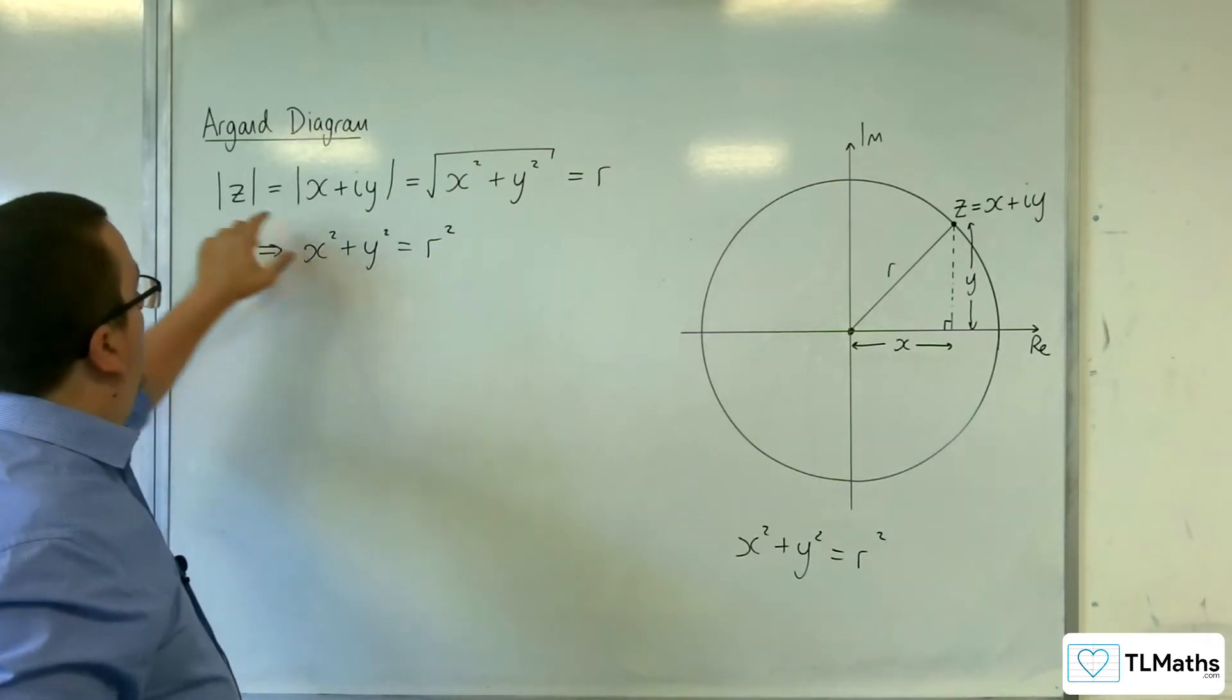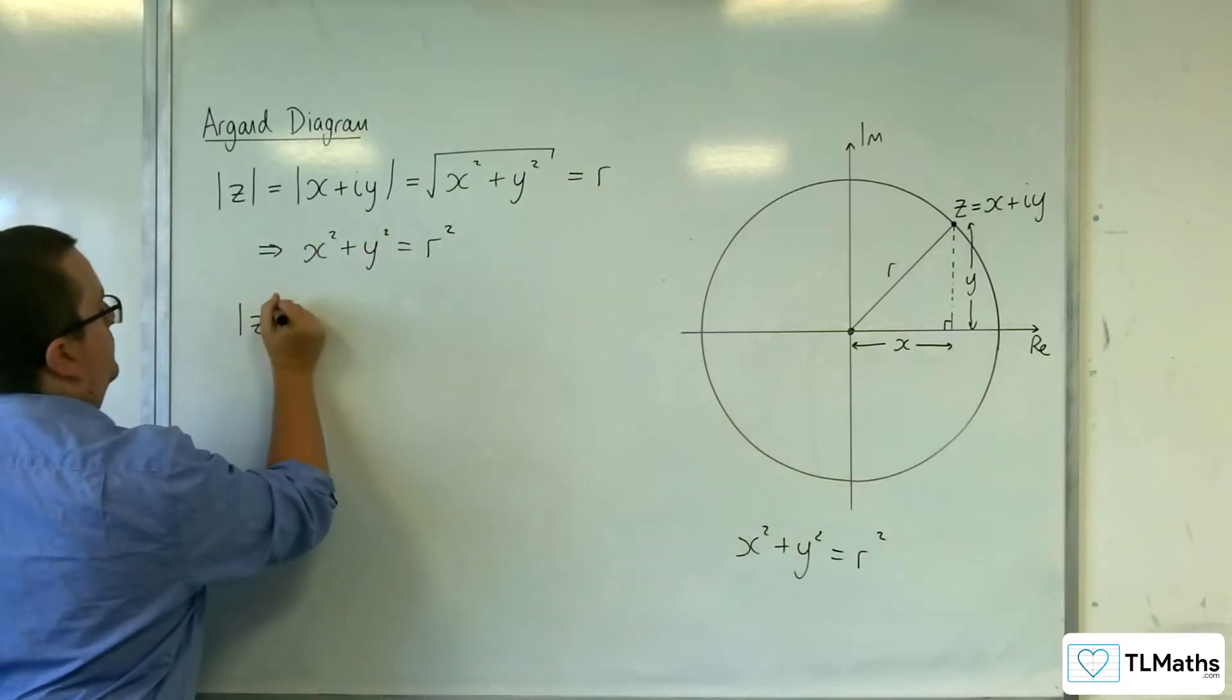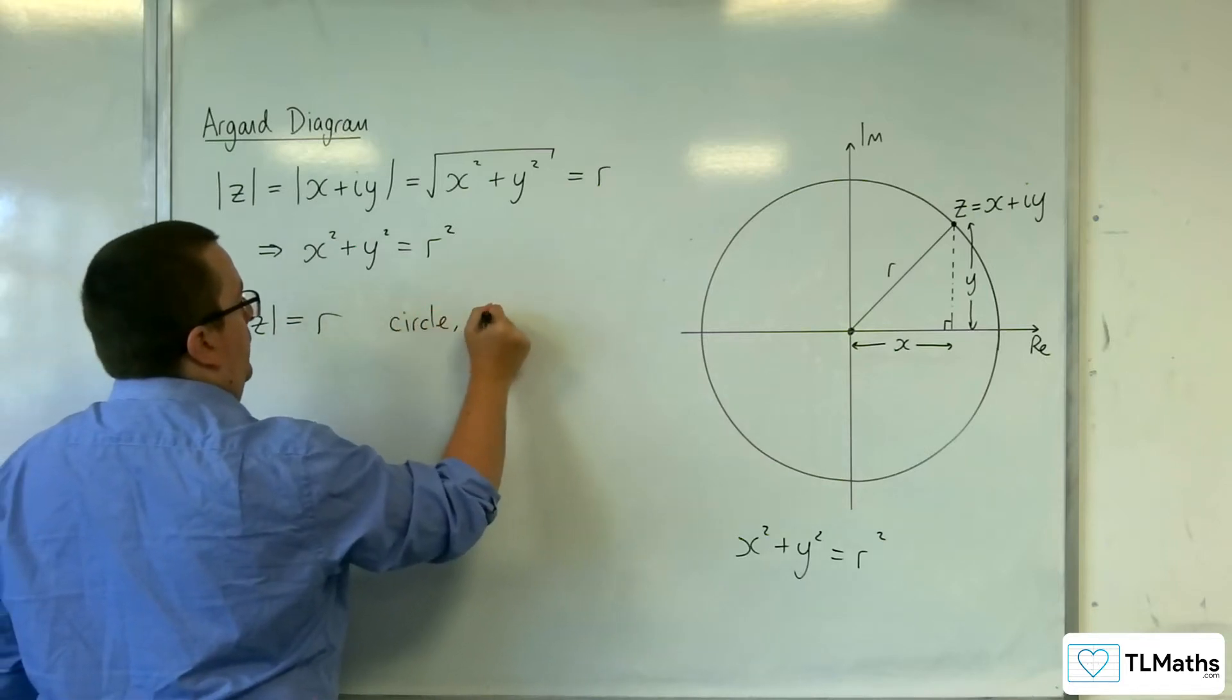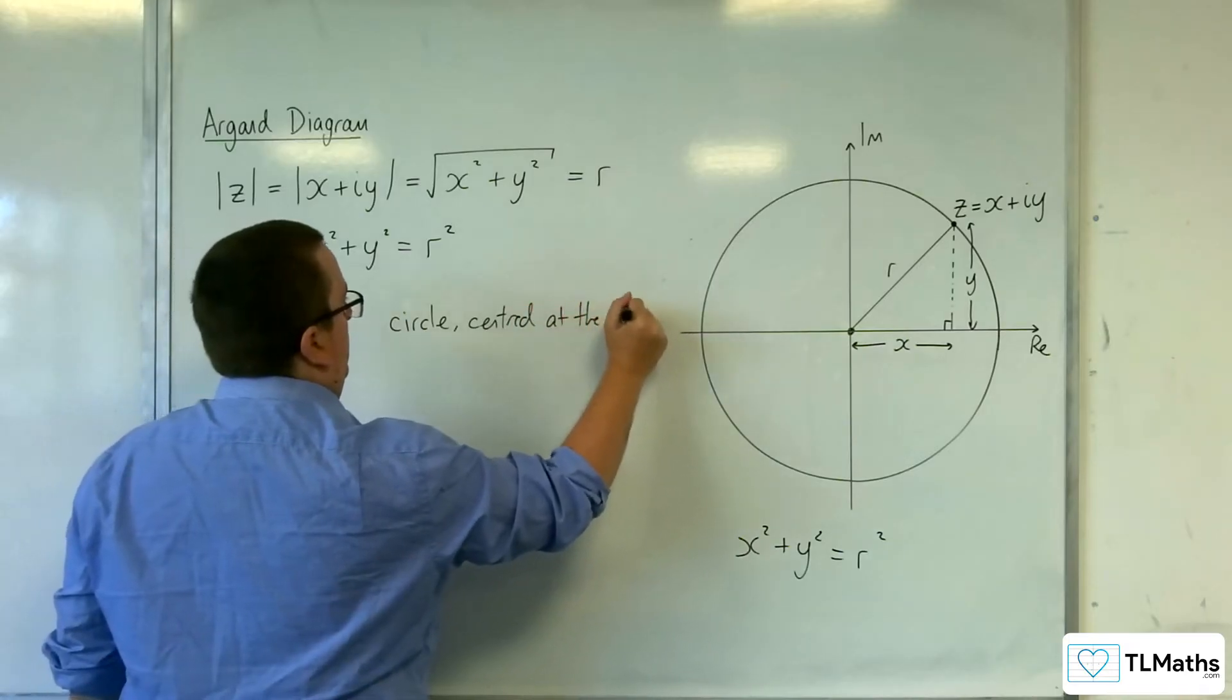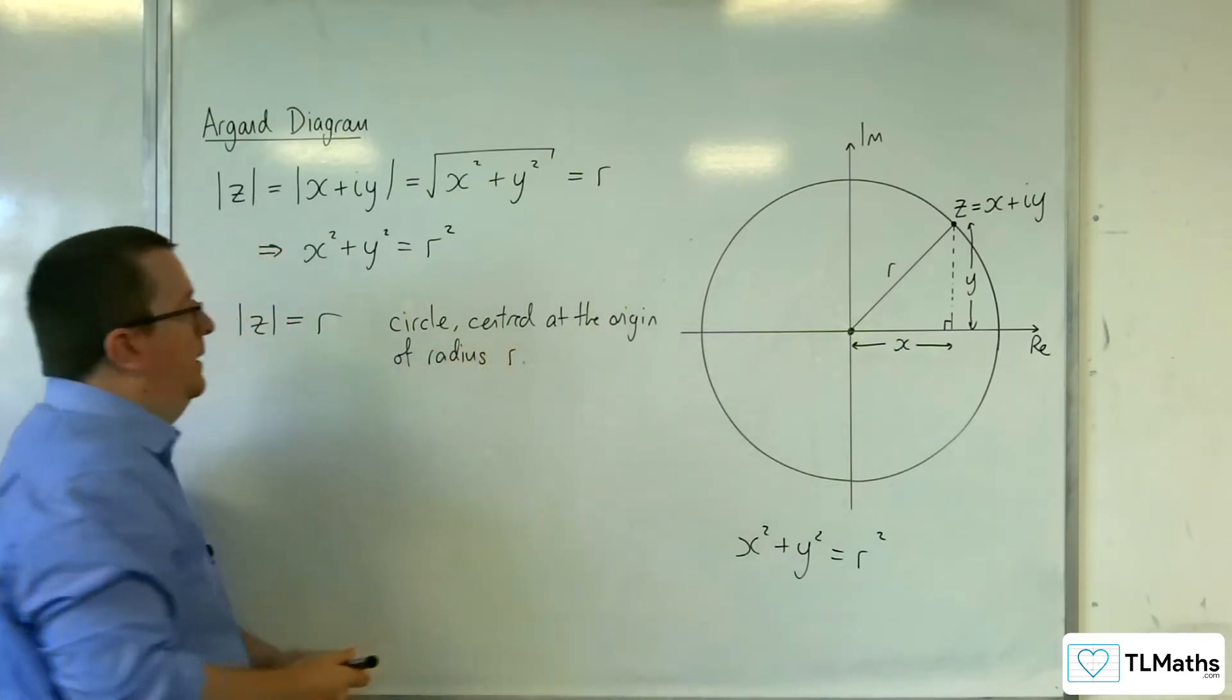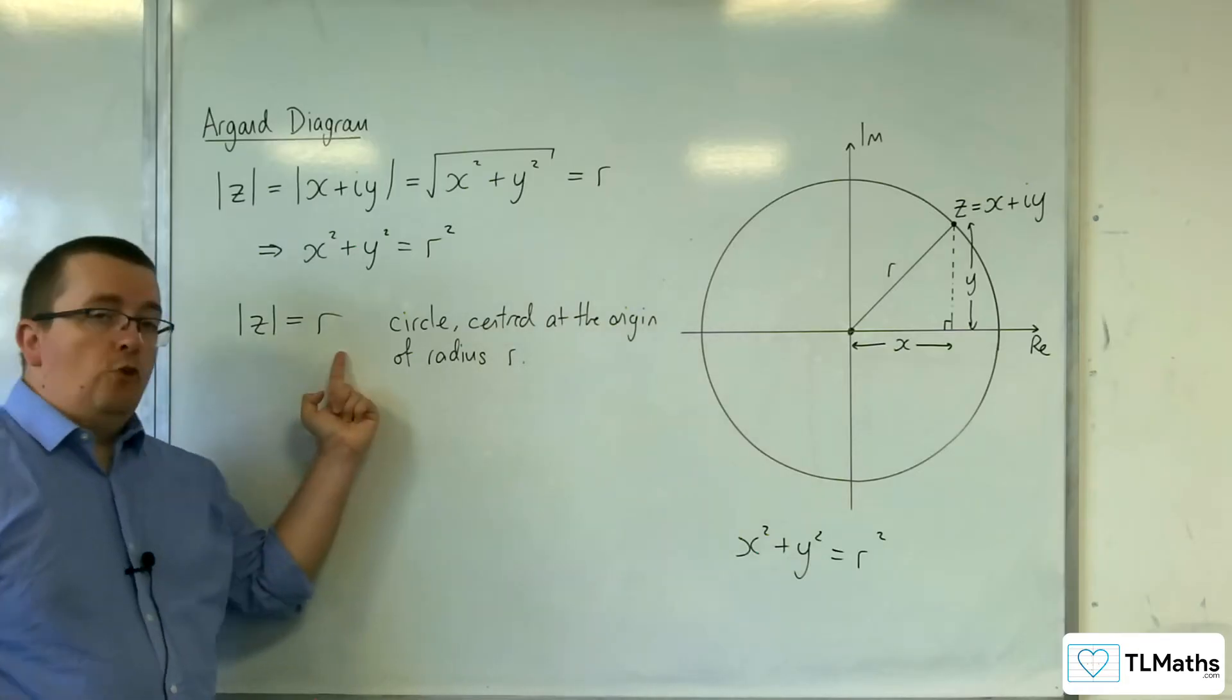So, mod z equals r describes a circle centred at the origin of radius r. So, on the Argand diagram, this describes a circle.